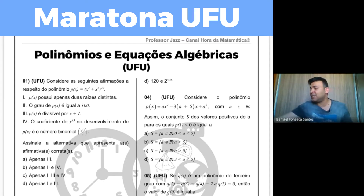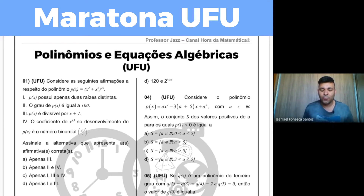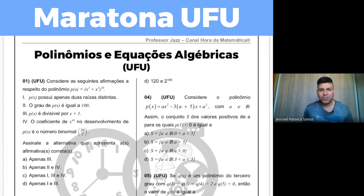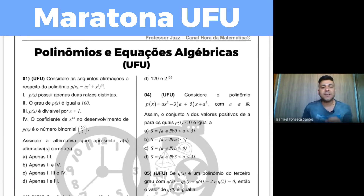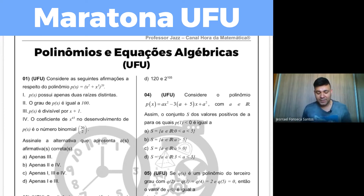A lista é bastante extensa, então fiz uma seleção das principais questões que vale a pena resolver e que também dão base para outras questões. Vão ser mais ou menos 10 exercícios, resolvidos do menor para o maior número, mas não necessariamente em ordem de dificuldade. Qualquer dúvida pode postar nos comentários que dentro do possível vamos resolvendo. Já está aparecendo na tela a lista de polinômios e equações algébricas, e vamos começar pela questão 1 — a mais recente desse assunto, que caiu na prova do ano passado.